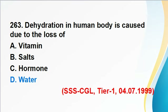Question 263: Dehydration in the human body is caused due to the loss of water. Answer D is correct. Dehydration is the condition where there is an acute shortage of water in the body. It occurs when the amount of water leaving our body is greater than the amount consumed, and this condition is known as dehydration.